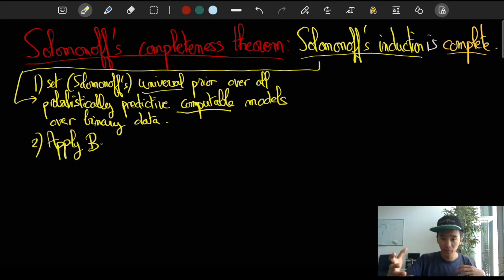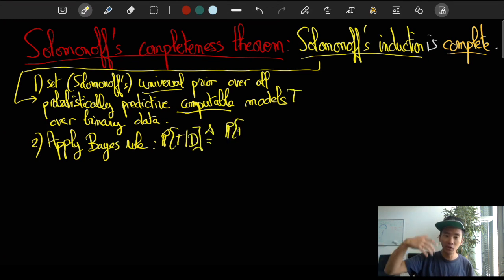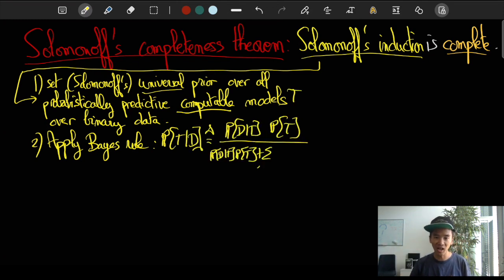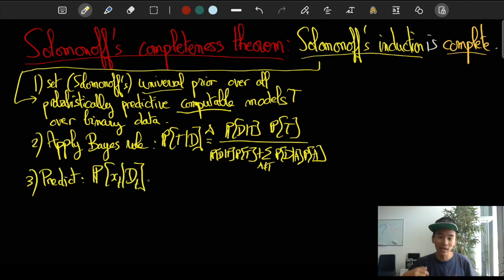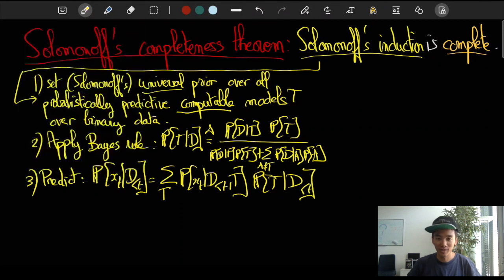And then we're going to apply Bayes' rule to determine which theories are most believable given the observed data, and then we're going to apply the law of total probabilities, which is this other equation I have in my hat, to make the predictions about the future data.